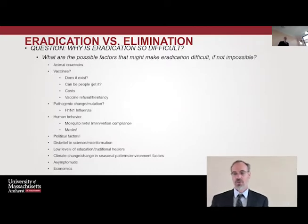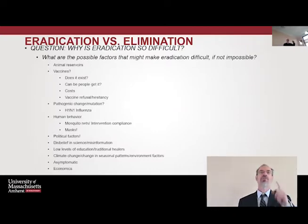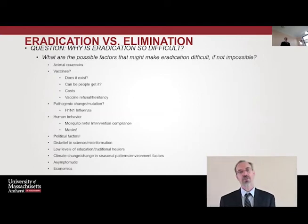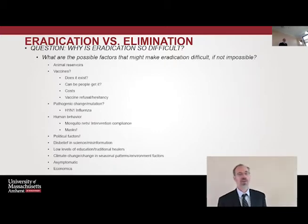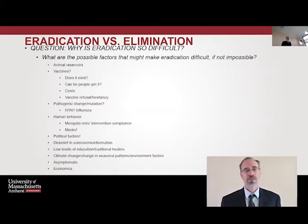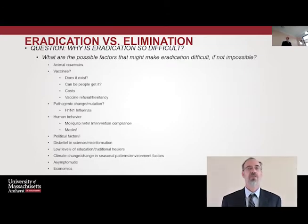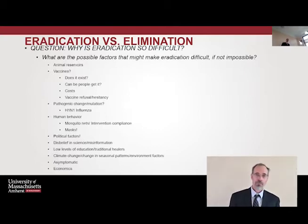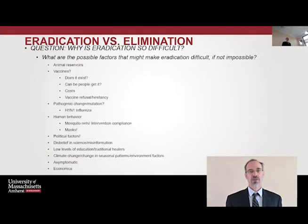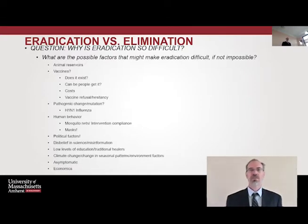Now, eradication versus elimination: why is eradication so difficult? The first factor is animal reservoir. If a pathogen exists in animals, it's relatively impossible to eradicate because there's always the possibility of zoonotic transmission. We're seeing this in the case of guinea worm — it was thought we could eradicate it, but then it was discovered that dogs can also be infected, which complicates eradication efforts and might lead us back to elimination or control.